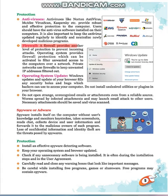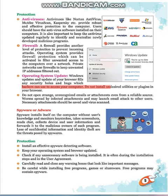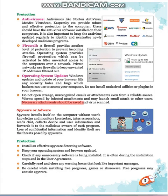A firewall provides another level of protection to prevent incoming attacks. The operating system provides firewall protection which can be activated to filter unwanted access to computers over a network. Private networks use firewalls to keep unwanted IP addresses filtered out. Operating system and browser updates fill any security holes and bugs which hackers can use to access your computer. Do not install undesired utilities or plugins in your browser. Do not open strange, unrecognized emails or attachments, even from a reliable source. Worms spread by infected attachments and may launch email attacks to other users. Necessary attachments should be saved and virus scanned.